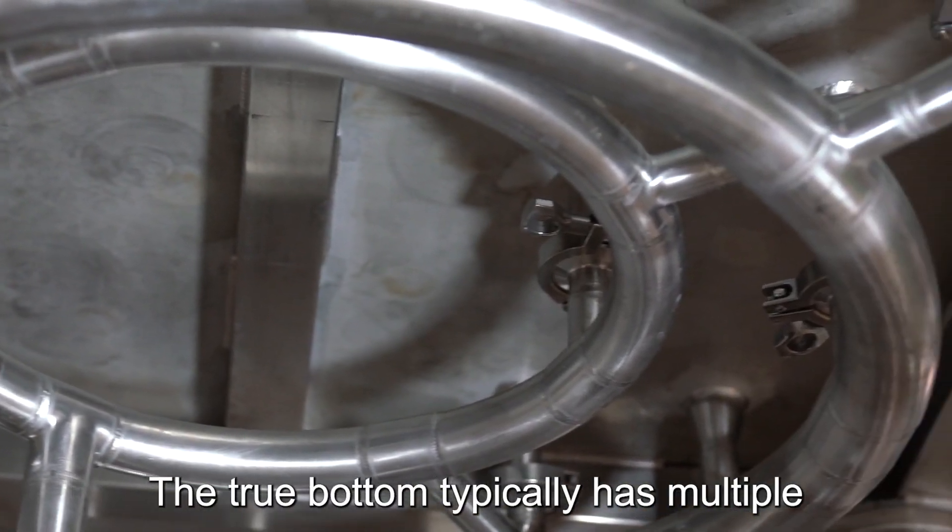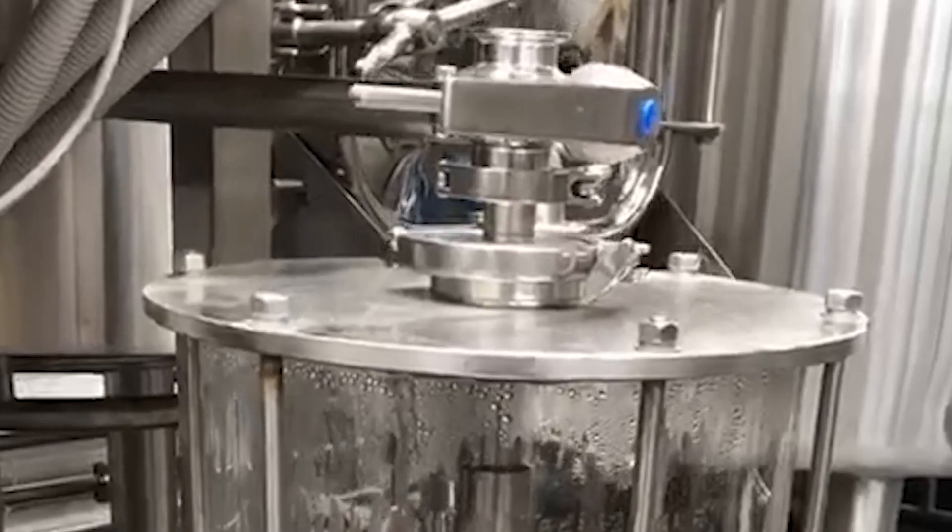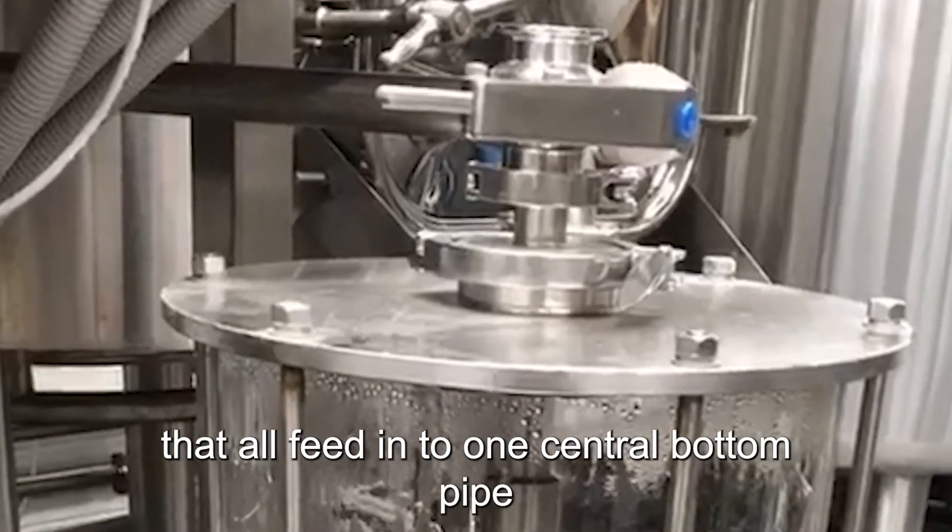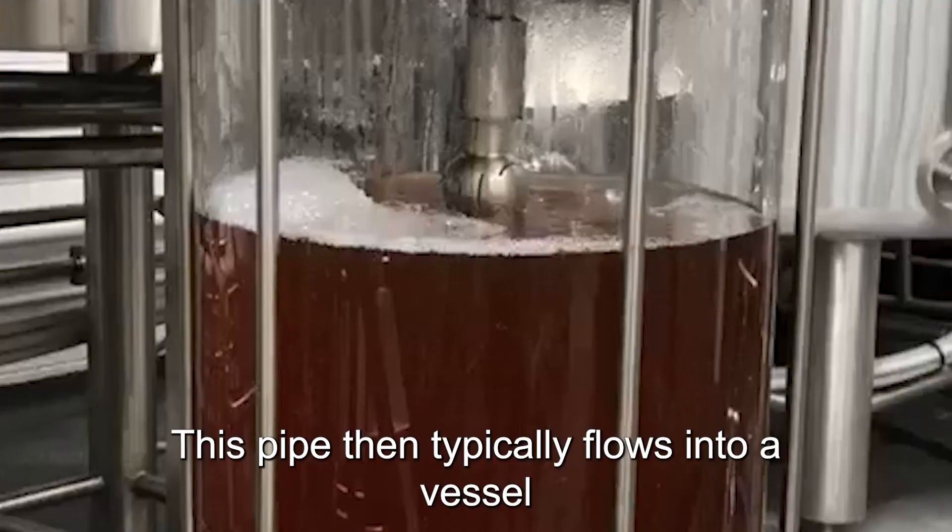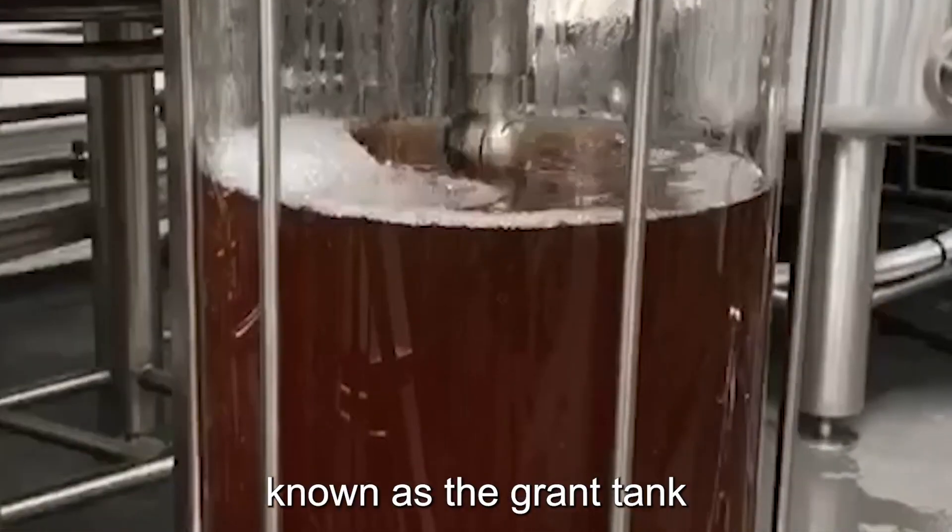The true bottom typically has multiple evenly spaced outlets that all feed into one central bottom pipe. This pipe then typically flows into a vessel known as the grant tank.